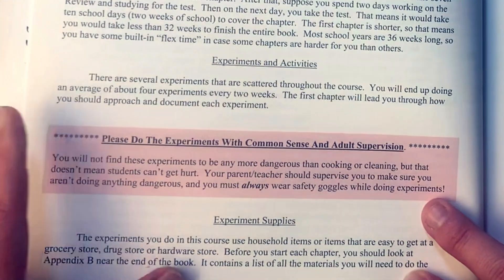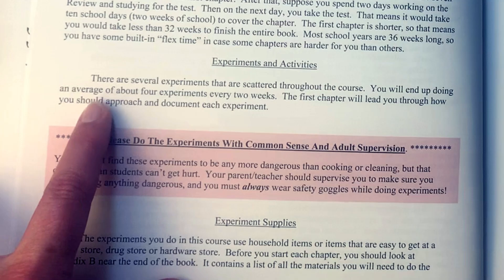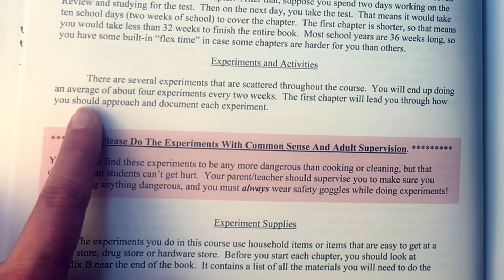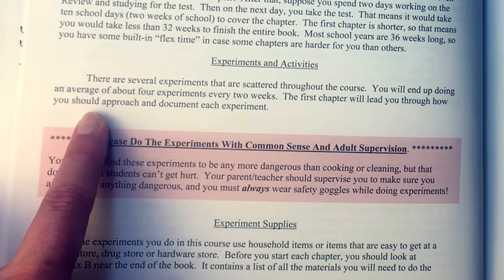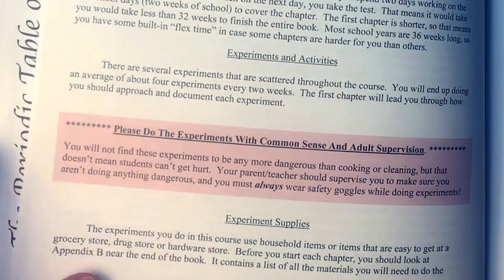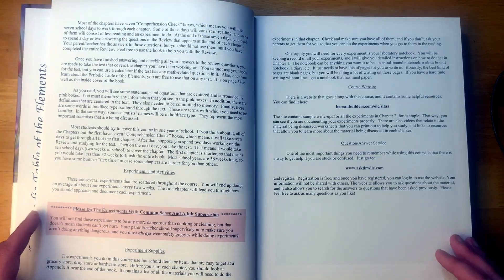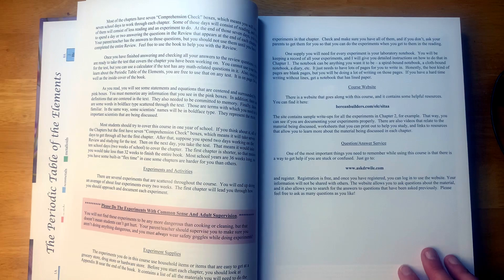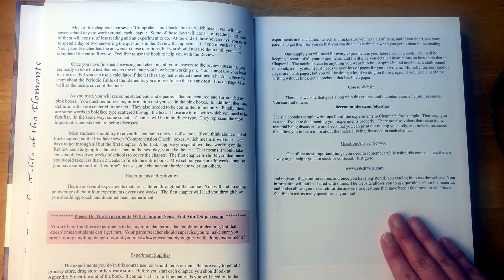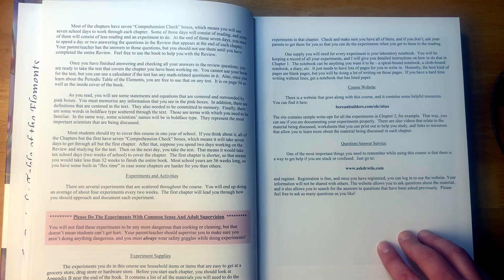Experiments are an integral part of this course. All right, so it says experiments and activities. There are several experiments that are scattered throughout the course. You will end up doing an average of four experiments every two weeks. The first chapter will lead you through how you should approach and document each experiment. So I believe they're going to start telling you how to work on lab reports as you're going through this. So this is a lab heavy course for a middle school student.